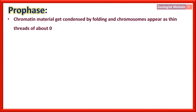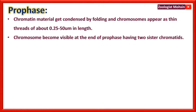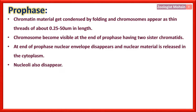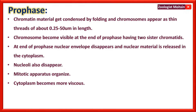Prophase: Chromatin material gets condensed by folding, and chromosomes appear as thin threads of about 0.25 to 50 micrometers in length. Chromosomes become visible at the end of prophase, having two sister chromatids. The nuclear envelope disappears and nuclear material is released into the cytoplasm. Nucleoli also disappear, the mitotic apparatus organizes on opposite poles, spindles start joining the kinetochore, and the cytoplasm becomes more viscous — that is a distinctive point.